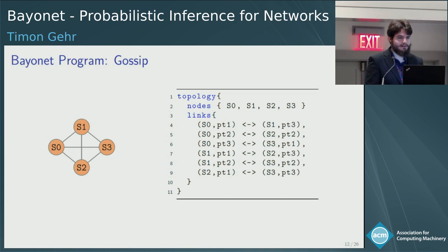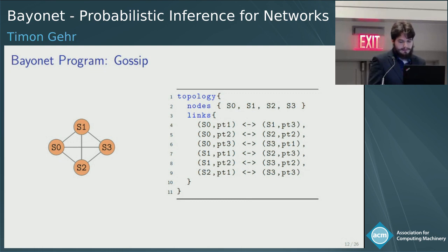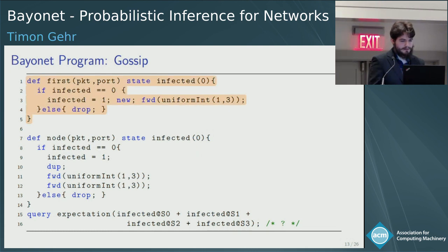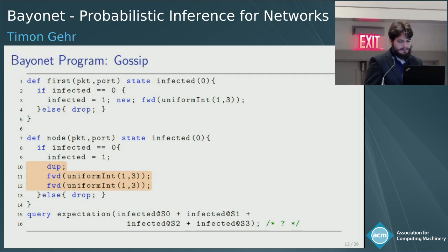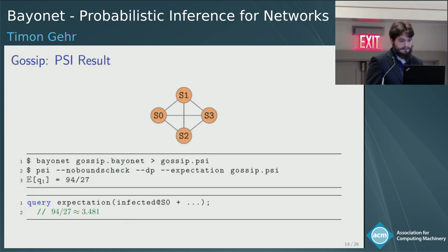Another example is a gossip protocol. We have four nodes, one of which is infected at the beginning and starts sending packets. We want to figure out how many nodes will in expectation be reached by some packet. The first node is infected and sends one new packet to some other node. Every other node gets infected whenever it receives a packet, and then forwards two copies of the packet to randomly chosen neighbors. In the end, we query the expected number of infected nodes. We send this to Psi, and it tells us that the expected number of infected nodes is about 3.481.